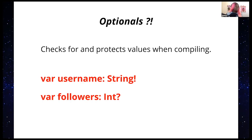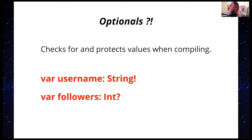A lot of that safety is due to optionals. Optionals are something you'll notice right away in Swift — coming from an Objective-C background, this threw me off a little. You suddenly have question marks and exclamation points in your code. Basically, optionals check for and protect values when compiling.